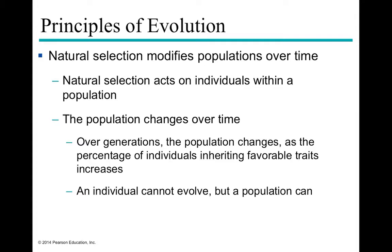Natural selection is constantly occurring and acting on all individuals within a population, leading to changes in the traits of a population over time. Individuals with favorable traits increase in frequency, while those with non-favorable traits decrease. A population evolves — but an individual does not. You can't decide to have a favorable trait; you're dealt a set of genetic cards. Over time, the proportion of individuals with a particular trait changes because those traits increase or decrease reproductive success, leading to changes in the next generation.